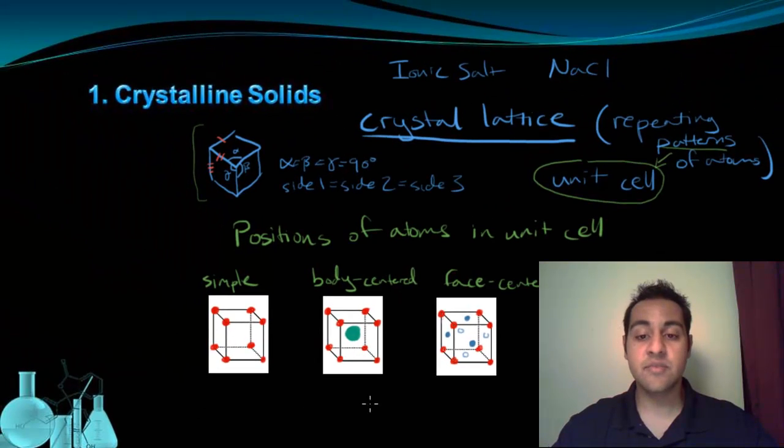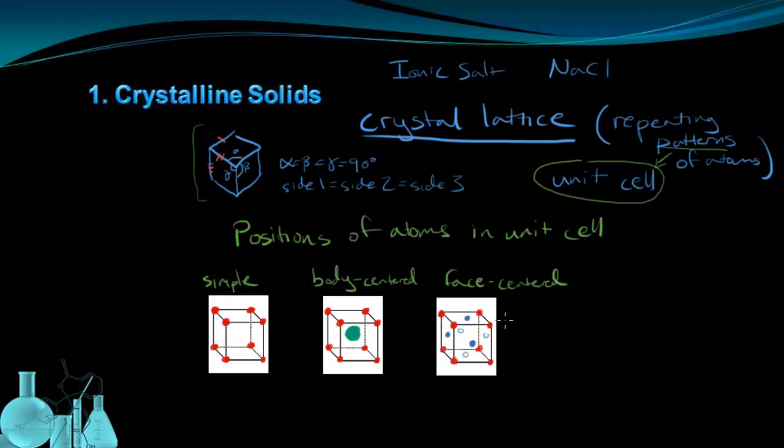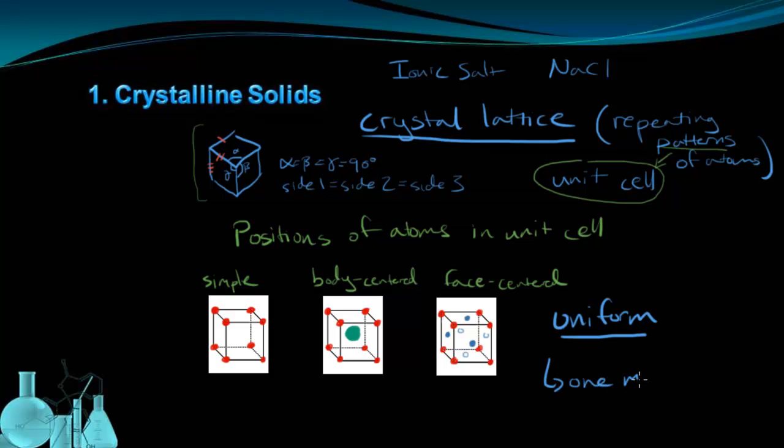And this is one of the ways that we classify crystalline solids, by the orientation or the position of the atoms in a unit cell. Now because crystalline solids have a repeating pattern, whether the pattern is simple, body-centered, or face-centered, the pattern is repeating. That means that crystalline solids are uniform throughout the entire substance. And this uniformity results in one specific melting point. Because all the forces and all the atoms are equally distributed throughout the entire structure, there's one melting point for the substance. Now not all solids have this crystalline structure.